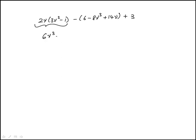So this would be 6v³ minus 2v. And then I have this minus here, and I'm going to distribute that minus, which means you change the sign in front of each of the terms.